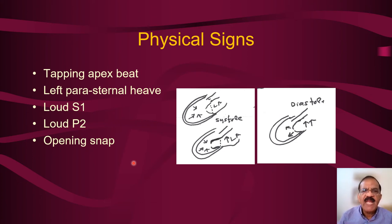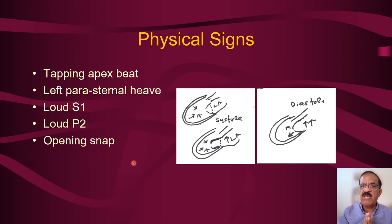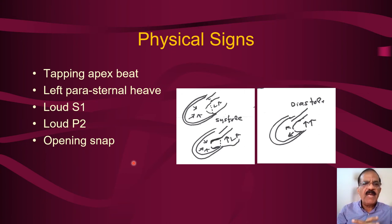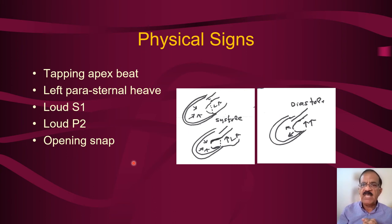Higher the pressure, quicker and earlier will be the opening snap. The presence of an opening snap and its proximity to the pulmonary component of the second sound indicate mitral stenosis, and also indicate the severity — the closer the opening snap to S2, the more severe the stenosis.